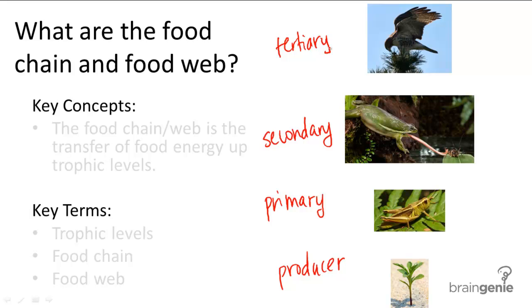So all the different levels of producers and consumers are called trophic levels. And a linear representation of this would be the food chain.